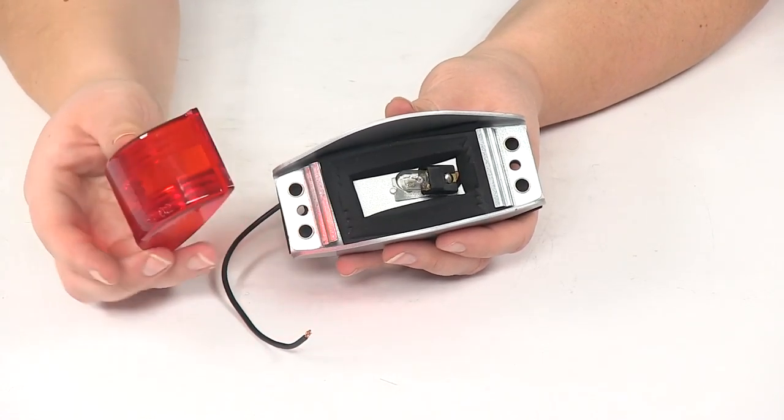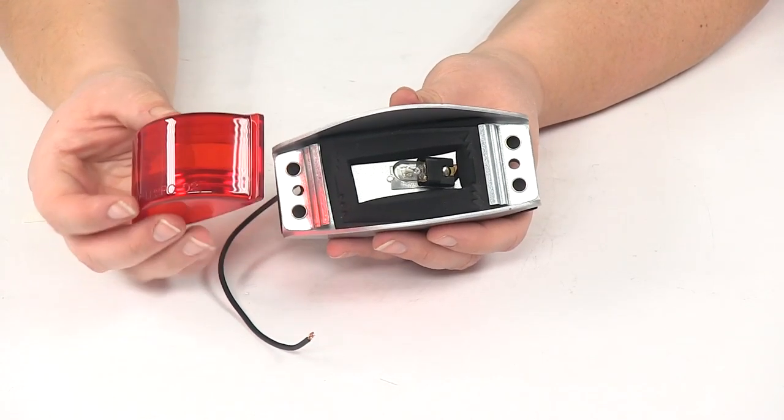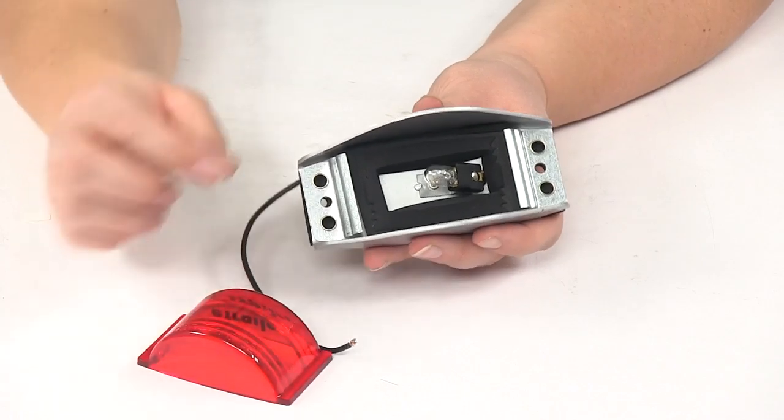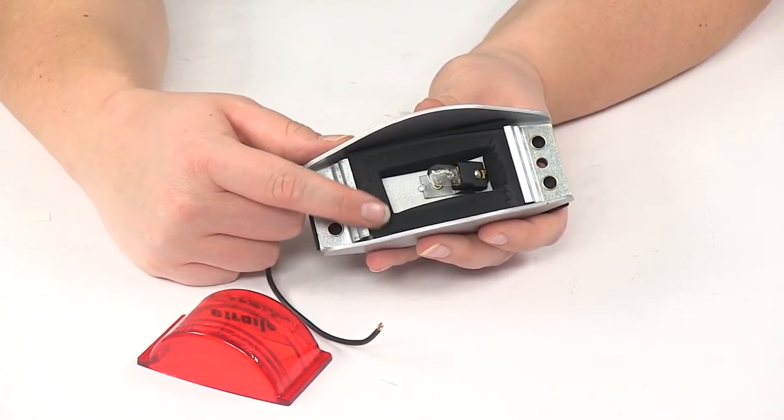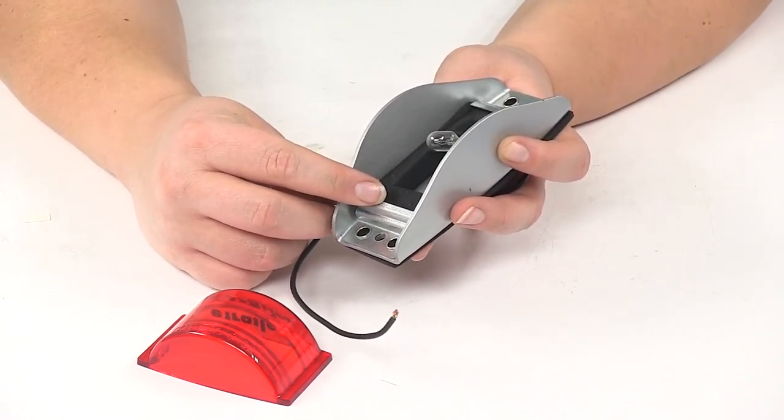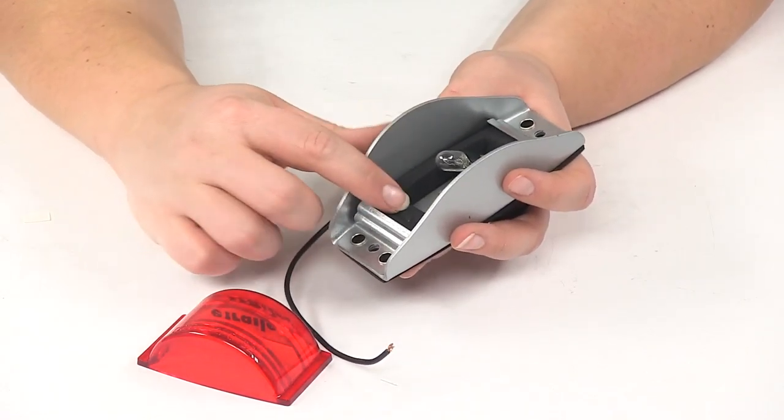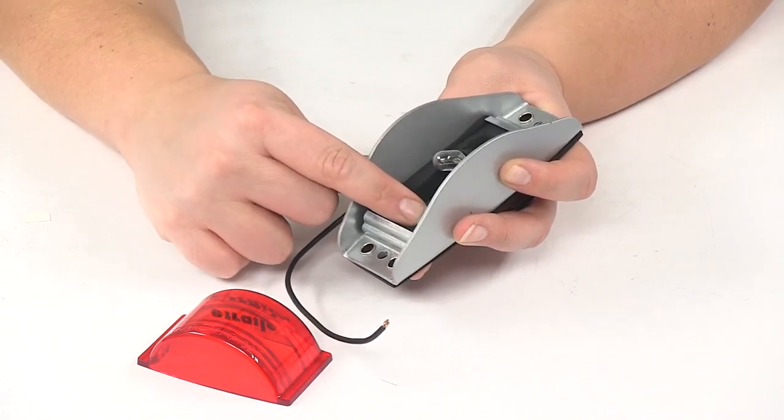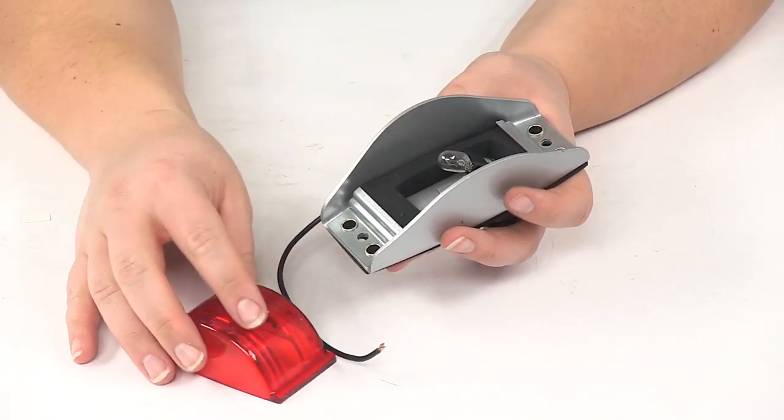So you're just going to press the flange on either side of the lens into the flange on the side of the housing itself. There's a little tab that's going to catch that flange and hold it into place, and the rubber foam gasket is going to provide the tension on that.